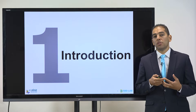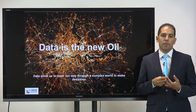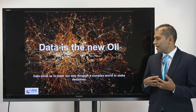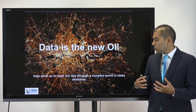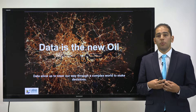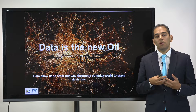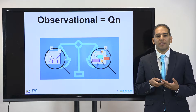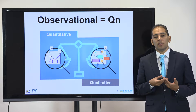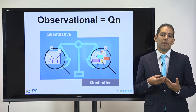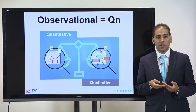Let's start with the introduction. What is data actually? Data is the new oil, and we can see that data allows us to steer our way through a complex world to make decisions — it's so important and very crucial for any decision maker today and for researchers. When we talk about data, there are two types: quantitative and qualitative data. But in observational research, we are mainly concerned with quantitative data.